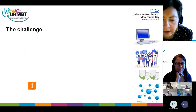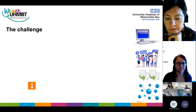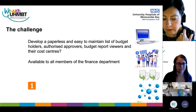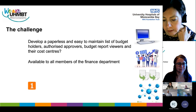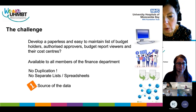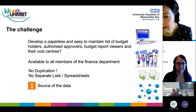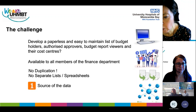So the challenge for us was: how might we develop a paperless and easy-to-maintain list of authorised approvers and their cost centres? This information needed to be available to all members of the finance department as a reference guide, to ensure queries are directed to the right person the first time, and systems are set up to ensure that approvers can access their relevant budget statement. We kind of have a mantra at our trust — one source of the truth — one source of data that generates whatever reporting is needed, so no one is reporting on the same thing but coming up with different information because they're using different data sources.